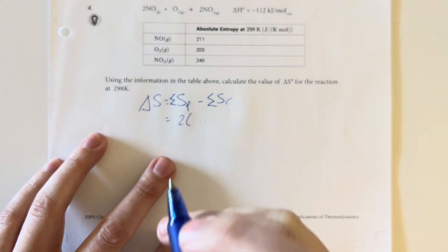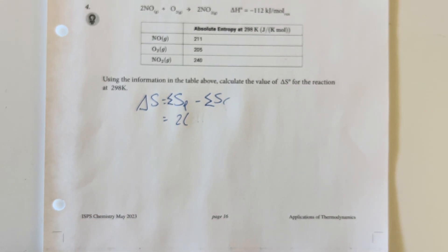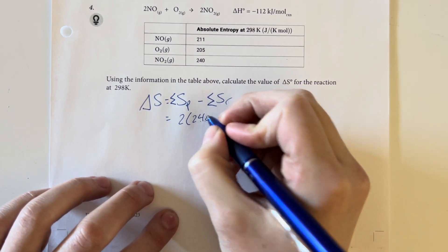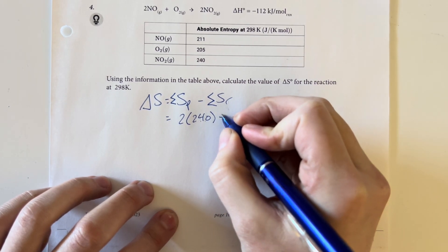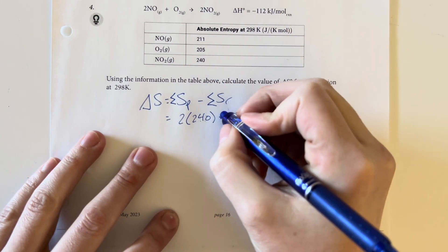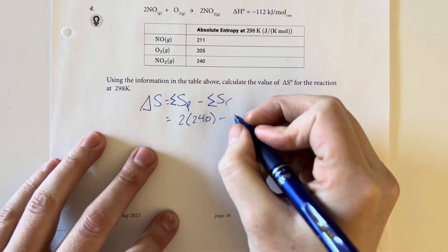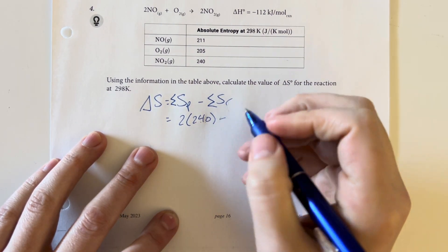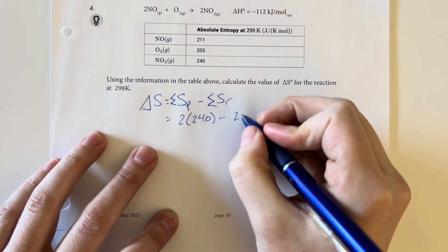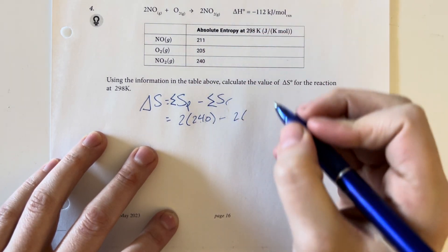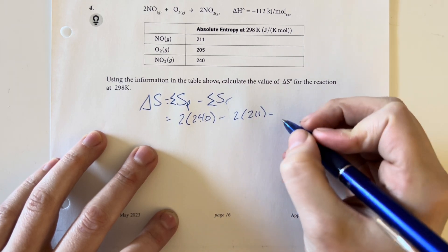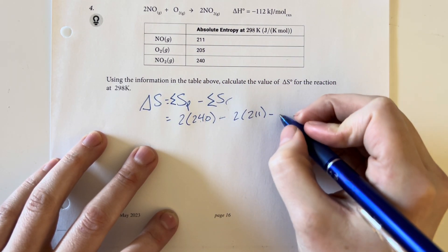So 2 times the nitrogen dioxide value minus the sum of the entropies for our reactants, which we have the 2 times the nitrogen monoxide, 211.